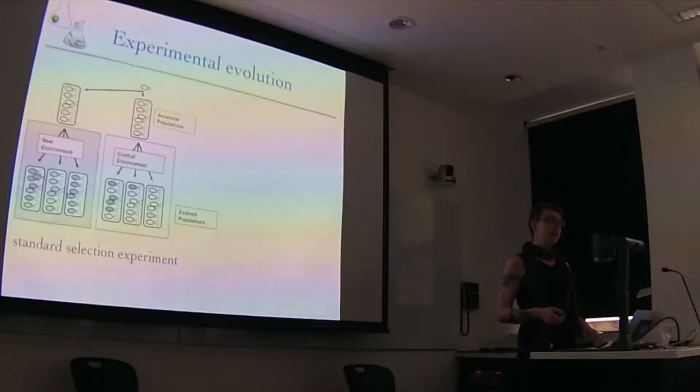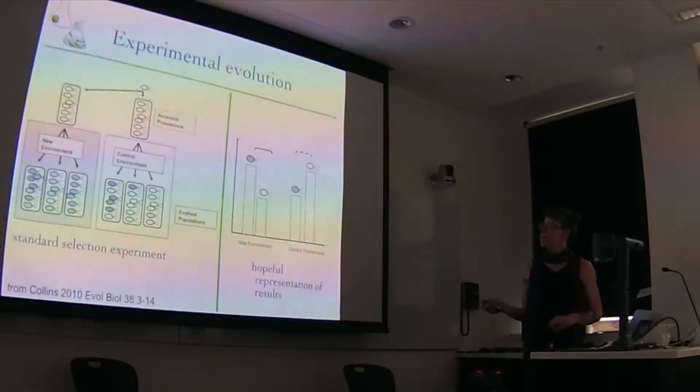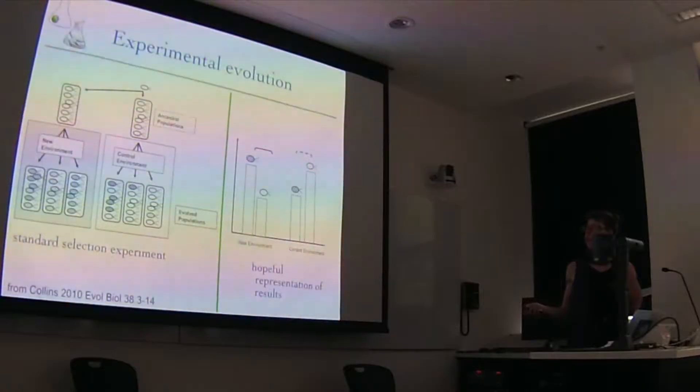Because that comparison to ancestors doesn't tell you how much of the change is due to your general lab environment, how much is due to the environmental change you've imposed and want to study. I'm not saying that's always a bad comparison, but it's a bad comparison in photosynthetic eukaryotes.